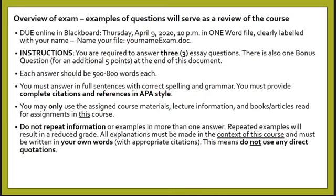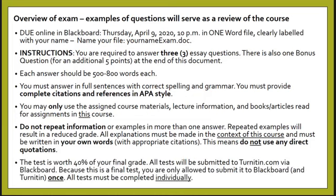Do not repeat information or examples in more than one answer. Because there's a huge range of choices, pick questions that are quite different — the best approach would be to pick one question from the classic section and one from the 20th-century section. Don't answer two questions on pluralism, for example. Don't use any direct quotes. The test is worth 40% of your final grade, and each question is weighted equally — a third each. All tests will be submitted to Turnitin when you submit to Blackboard. Because it's the final test, you're not allowed to submit it more than once.